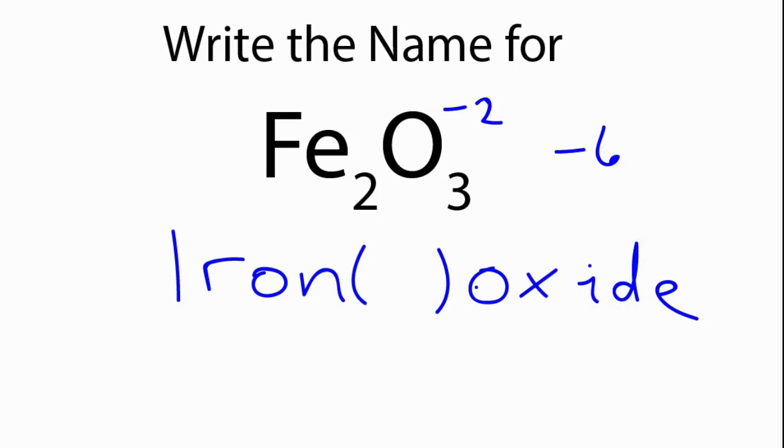We need to balance that out on this side with a positive 6. The way to do that is 2 times some number gives us plus 6. So 2 times plus 3, that will give us plus 6.